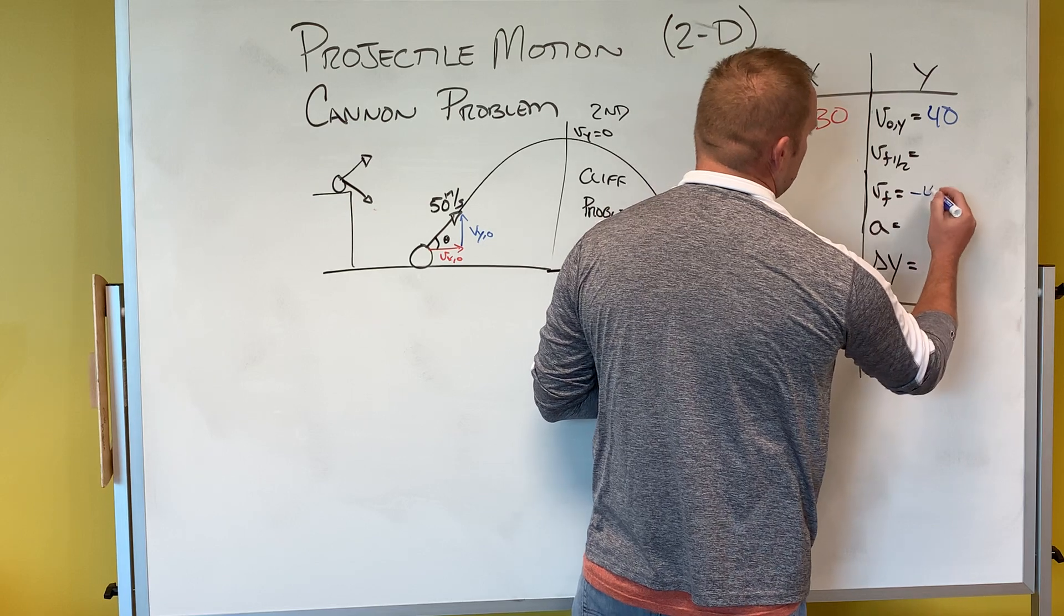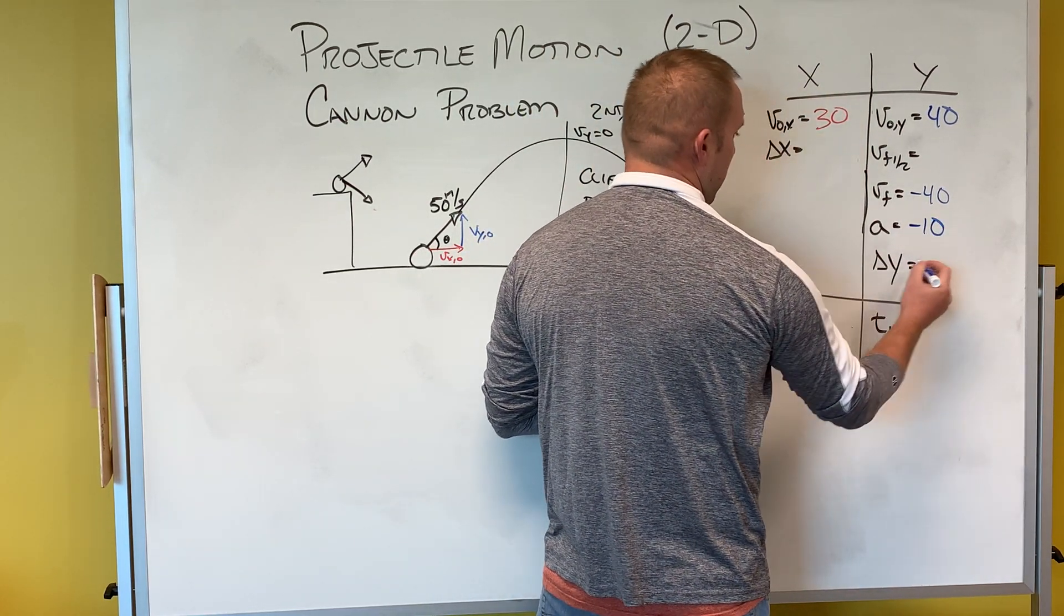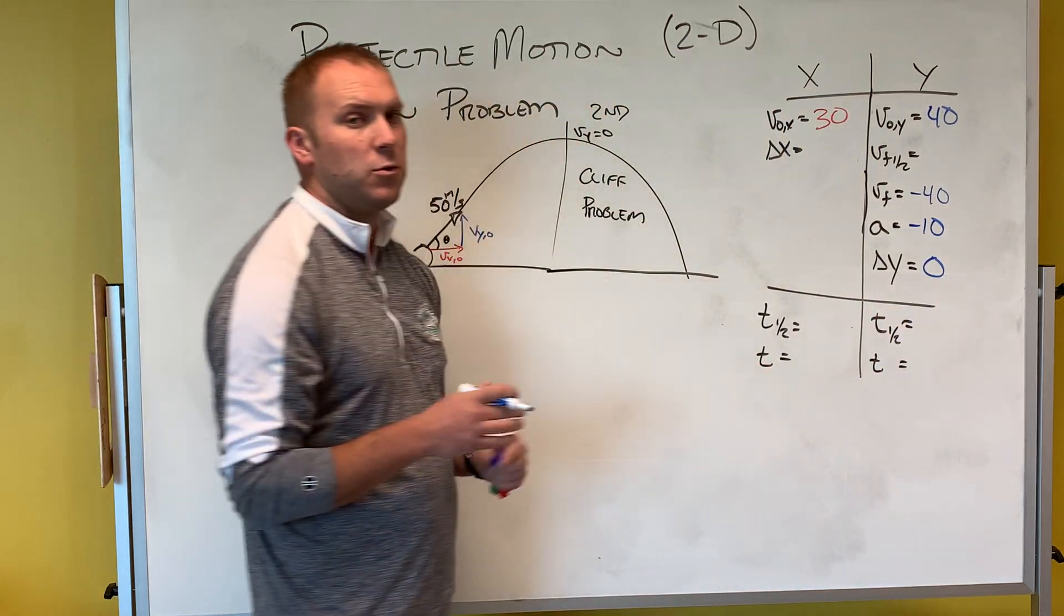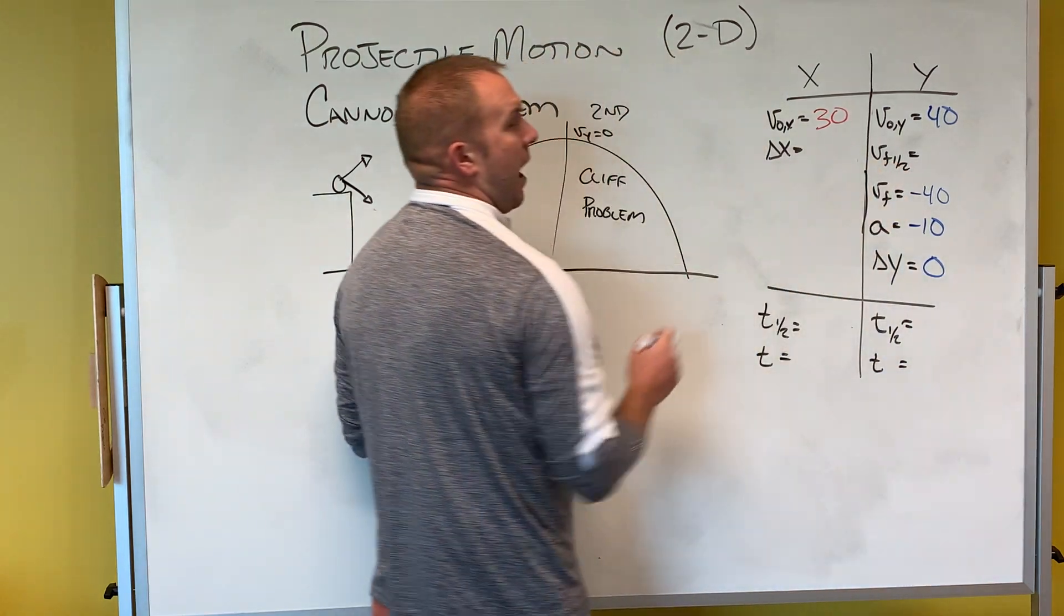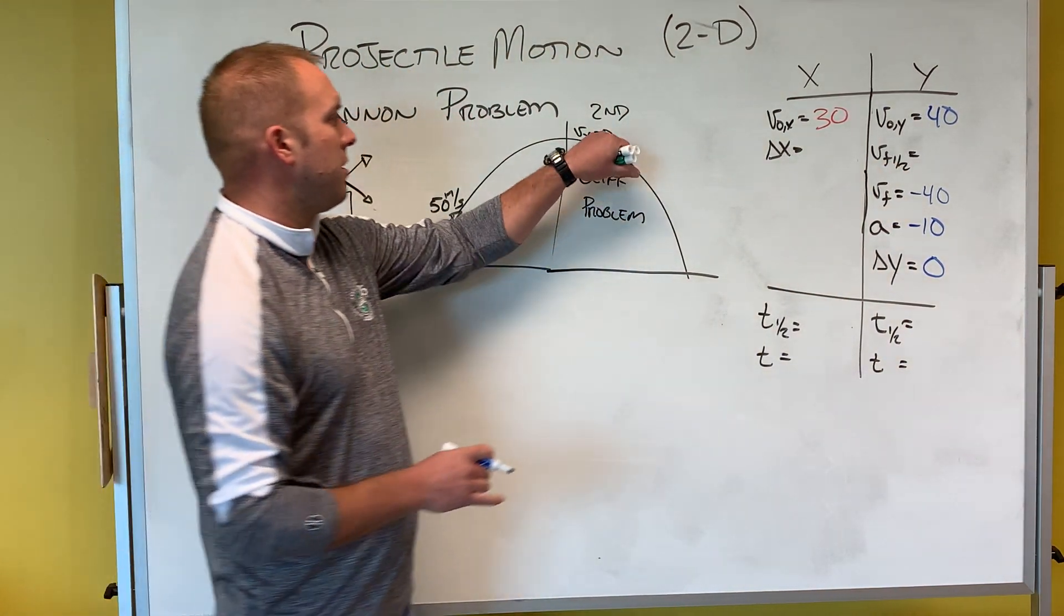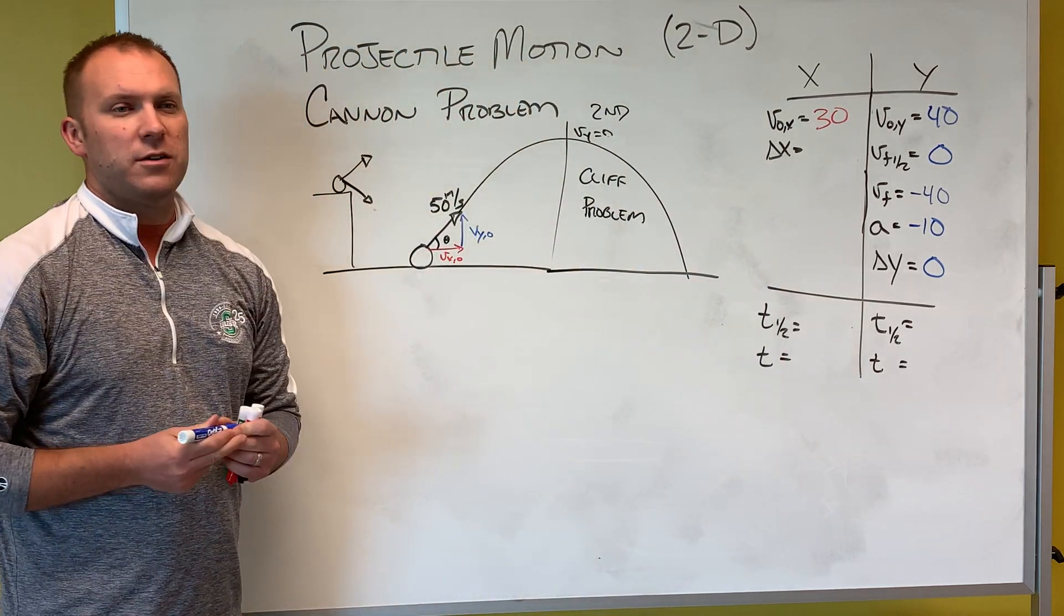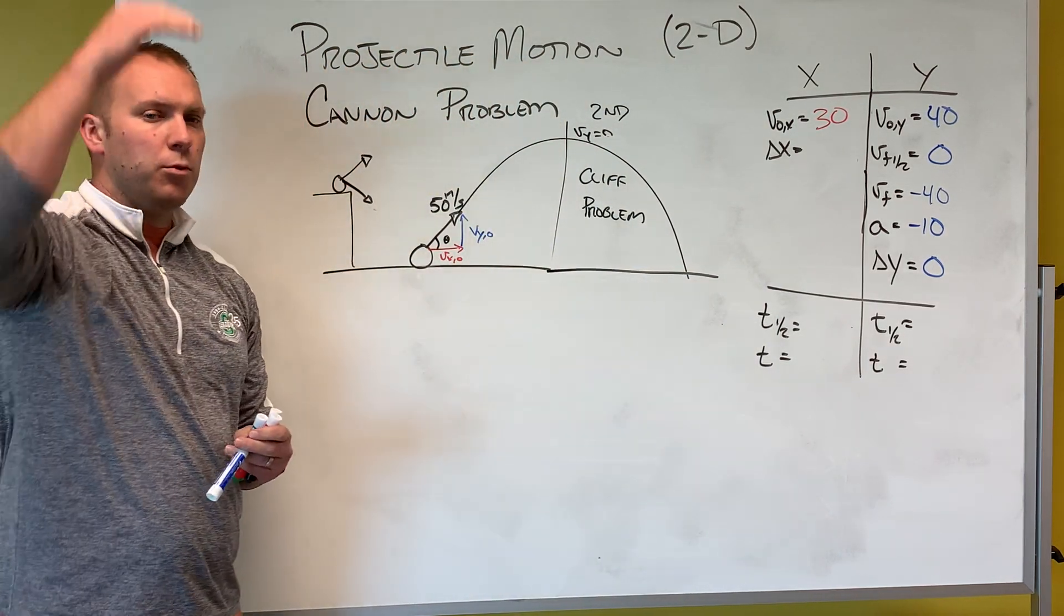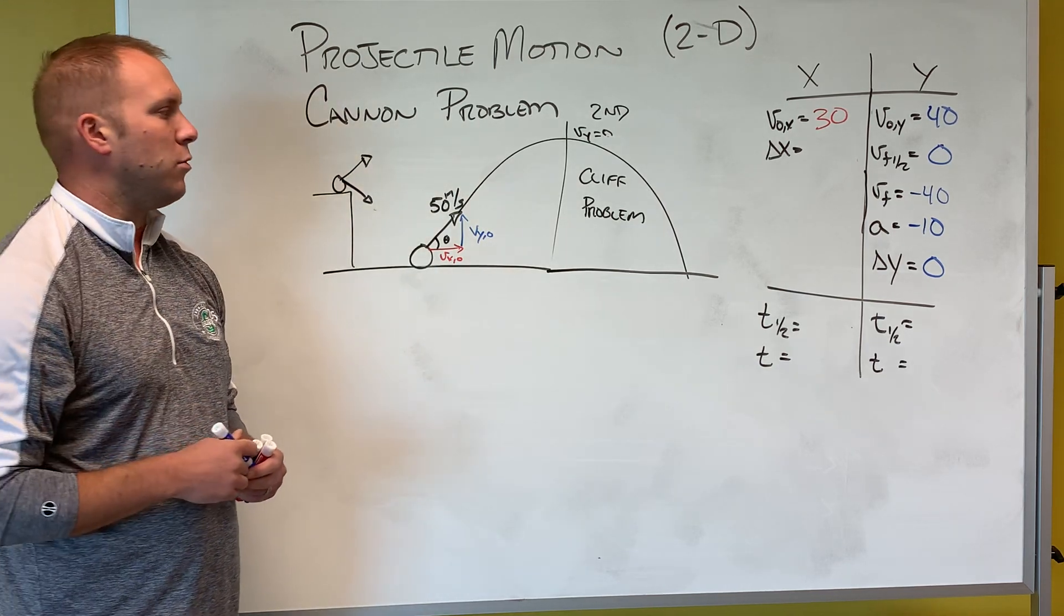I know that my final velocity is negative 40. I know my acceleration is negative 10. My displacement, total displacement would be zero from start to finish. And I also know my final velocity halfway through, that's here where my object is no longer moving upwards. It has reached a velocity of zero at the very top and then it's going to start moving back downwards.